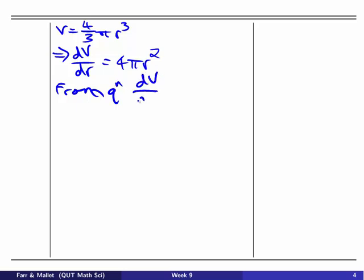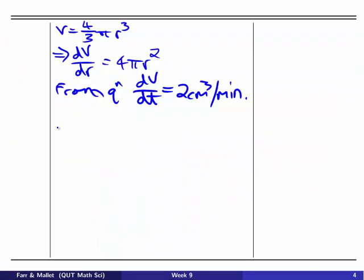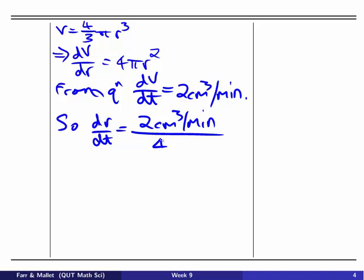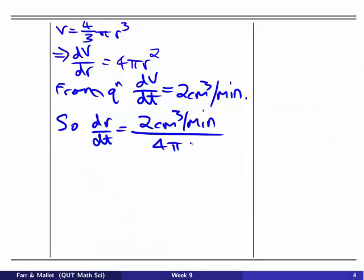From the question, we're told that dV/dt is equal to 2 cubic centimeters per minute. So we've actually got both the pieces of information we need to find dr/dt. So we have dr/dt is equal to 2 cubic centimeters per minute divided by 4 pi r squared. Pi r squared, we're actually looking at the specific case where the radius is 3 centimeters, so we can just pop that straight in, 3 squared centimeters squared.